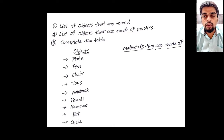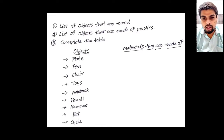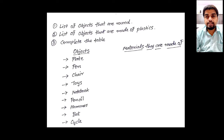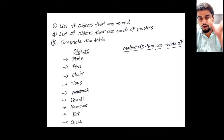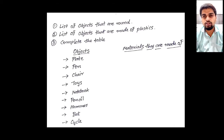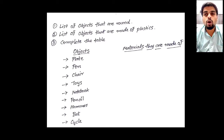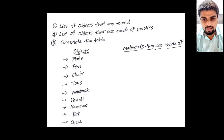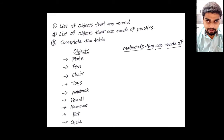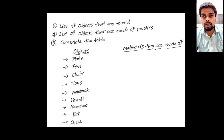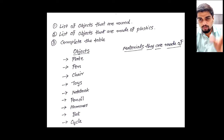You have to complete Table 4.1 given in your textbook — I have also shown the image of this table in this video. The table has two columns: the first column lists objects like plate, paint, chair, toys, notebook, bat, and cycle, and the second column is for the materials those objects are made of. For example, a plate is made up of steel or plastic, and a pen is made up of plastic.